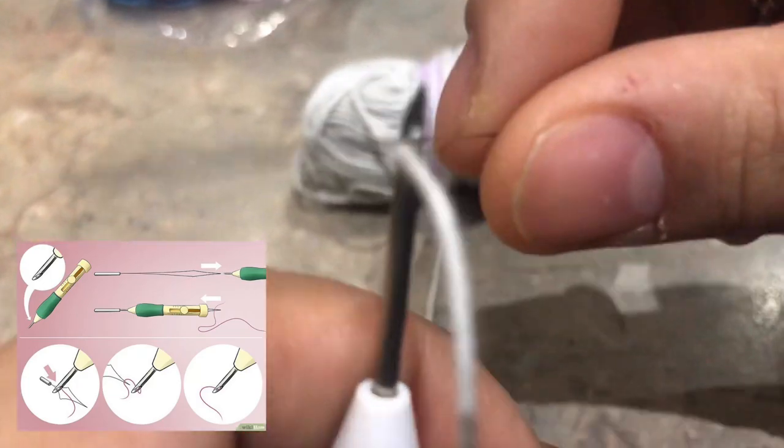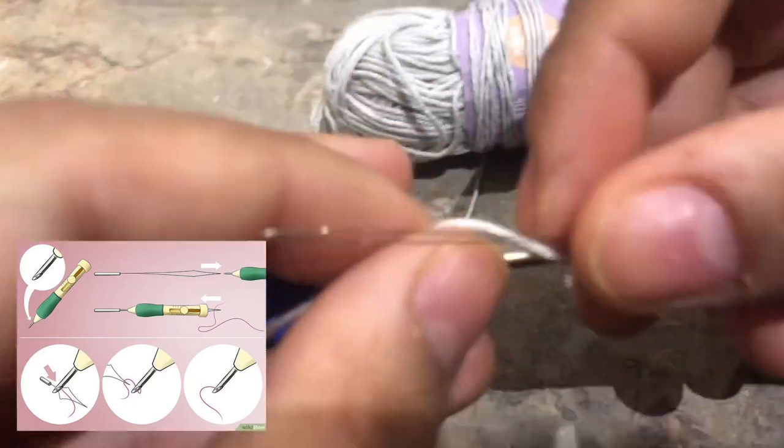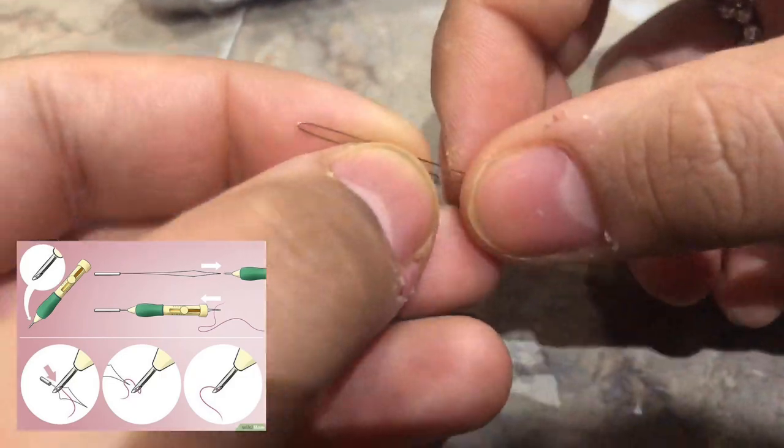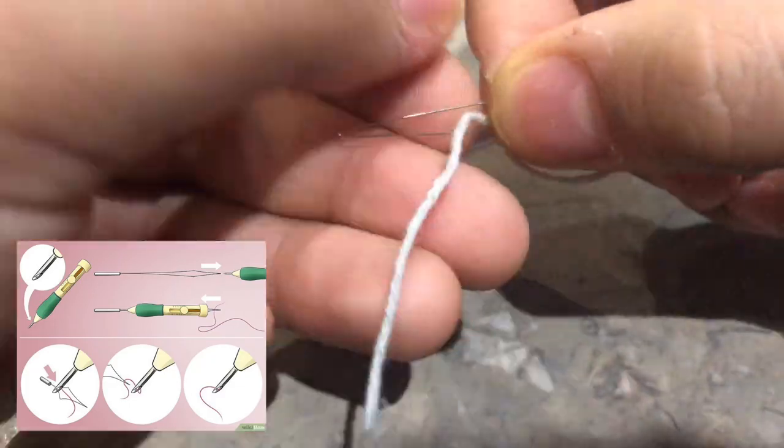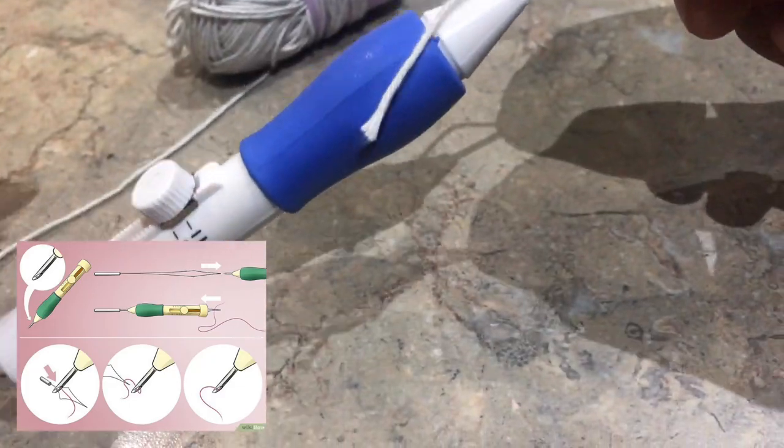And then just thread the string once again in the hoop and then just pull the hoop through. This is one of the tricky parts that I find. It's good to have a bigger string.